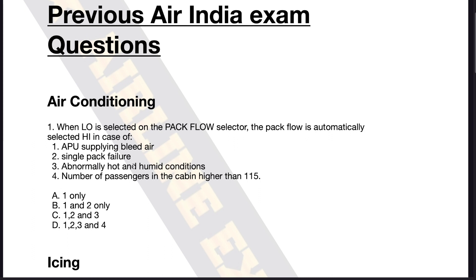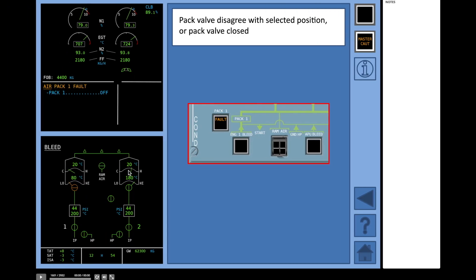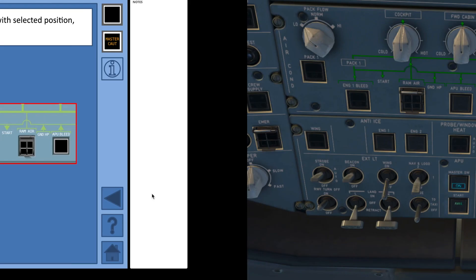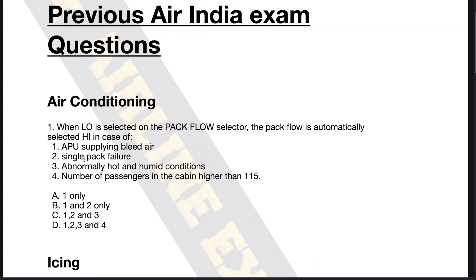Number two is single pack failure. So anytime we lose one of the packs — if I put a pack one fault, the remaining pack automatically switches to high. Why is this? Obviously to maintain the air conditioning in the cabin. You only have one pack, so you want to maintain sufficient air conditioning. So both statement one and two are correct.